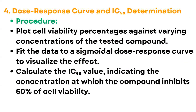The next step is dose-response curve and IC50 determination. The dose-response curve shows what activity or cellular response is observed at each dose. IC50 is the inhibitory concentration at which 50% of cells die. Plot cell viability percentage against varying concentrations of the test compound, fit the data to a sigmoidal dose-response curve, and calculate the IC50 value indicating the concentration that inhibits 50% of cell viability.